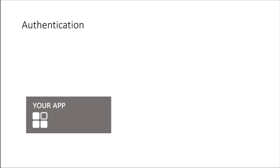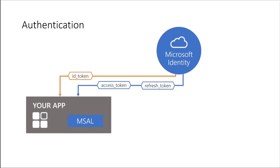Let's talk about authentication. When your app is integrated with libraries like MSAL, it actually requests two tokens from the Microsoft Identity Platform — the security token server, also called AAD or Microsoft Identity Platform. Your application integrated with MSAL will receive an ID token, access token, and refresh token.